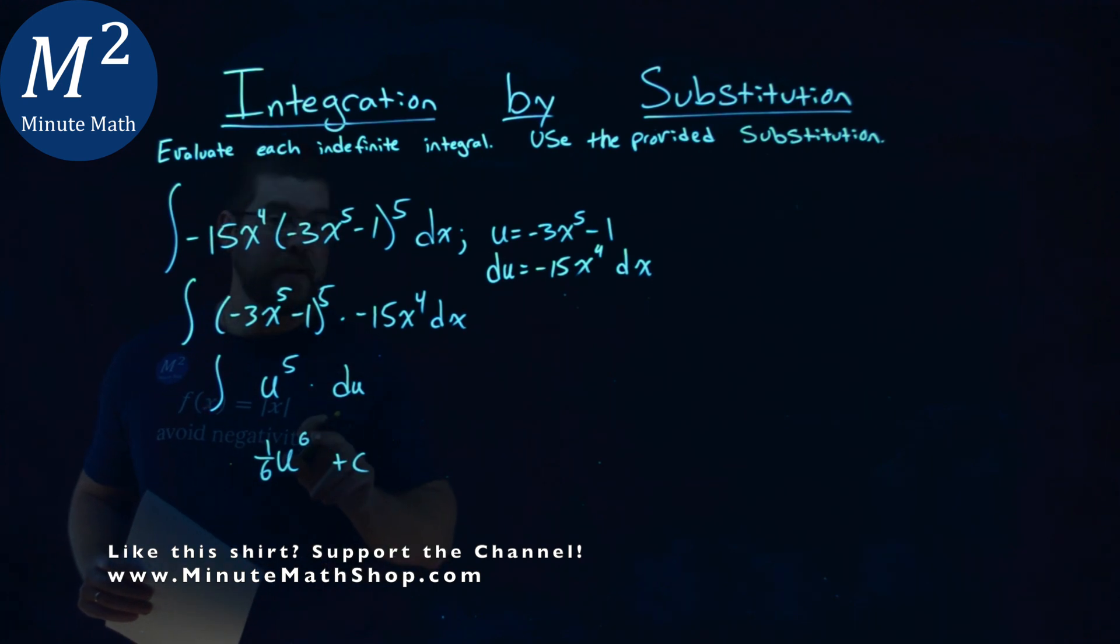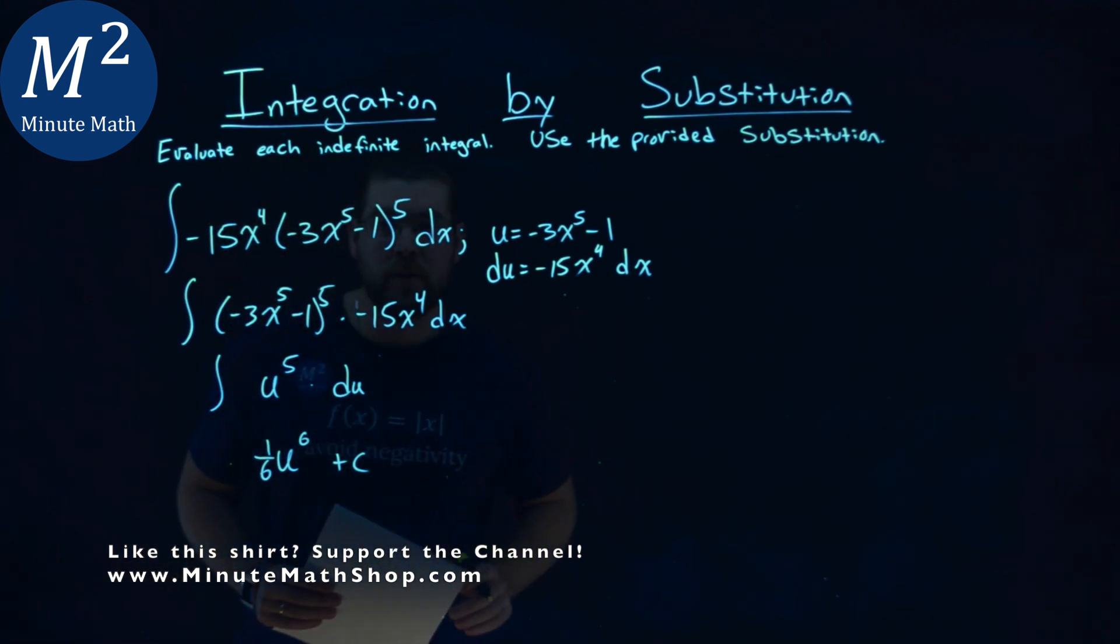Now notice this. If we take the derivative, 6 comes down, cancels with that 1 sixth, and we're left with u to the fifth power. We're good.